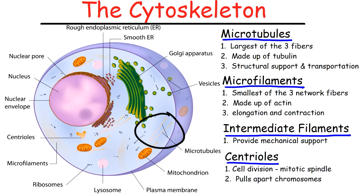The microtubules are made up of a protein called tubulin, and the microfilaments are made up of a protein called actin. The microtubules provide structural support and transportation services to the cell — vesicles can move from one part of the cell to another by means of the microtubules. The microfilaments are involved in elongation and contraction, so they assist the cell to move.